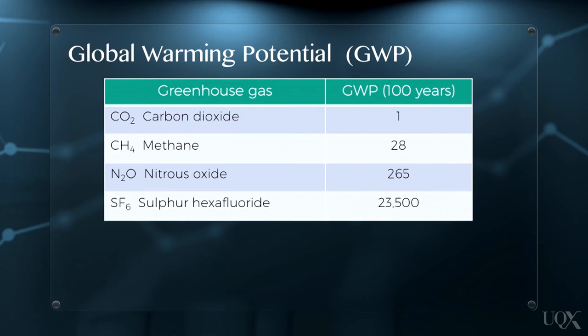Global warming potentials are published by the Intergovernmental Panel on Climate Change and recognized by the United Nations Framework Convention on Climate Change. Here, you can see the global warming potentials of several gases for a 100-year time period.